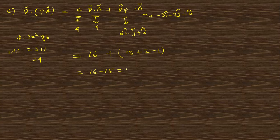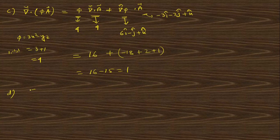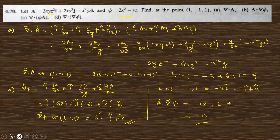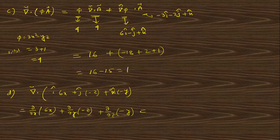Part d: divergence of grad φ. grad φ = i-cap(6x) + j-cap(−z) + k-cap(−y). Taking divergence: ∂(6x)/∂x + ∂(−z)/∂y + ∂(−y)/∂z = 6 + 0 + 0 = 6.